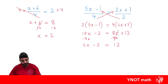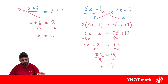We're trying to get x on its own, so we add 2 to both sides. Minus 2 plus 2 is 0, leaving 2x equals 14. Dividing both sides by 2 gives us x equals 7.